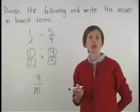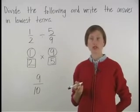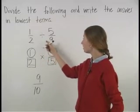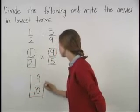Since nine tenths is in lowest terms, we have our final answer. So one half divided by five ninths is nine tenths.